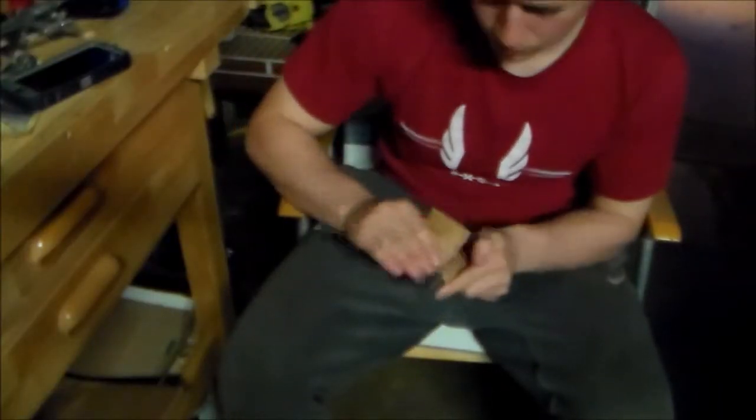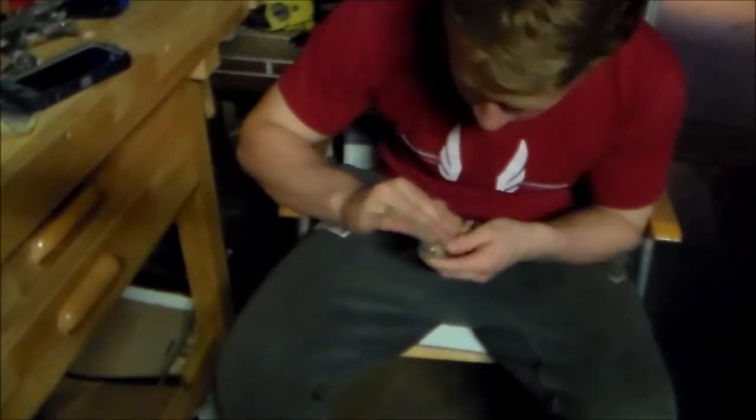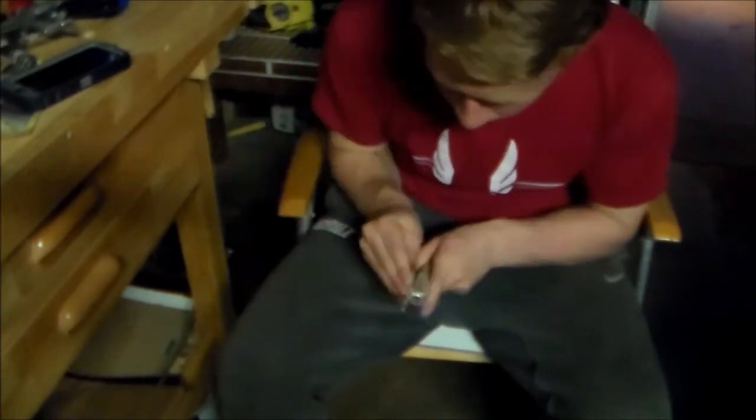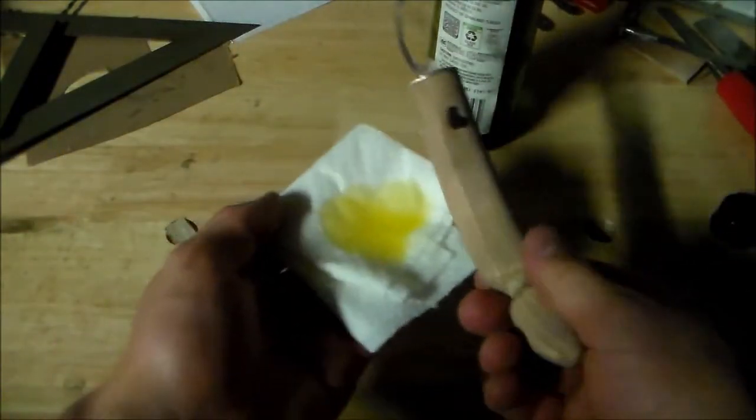I sanded the handle up to 220 grit after I glued everything up, and unfortunately I didn't get a video clip of that, so sorry about that. But after that, I bring out the grain using this really rare and super expensive stain called extra virgin olive oil, and after that we went on to sharpening.